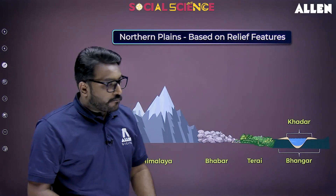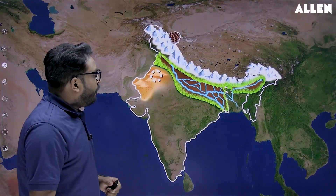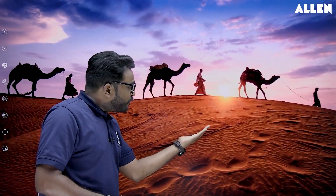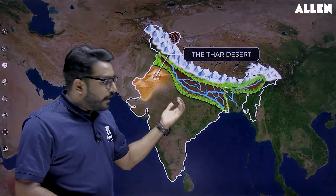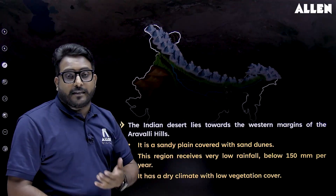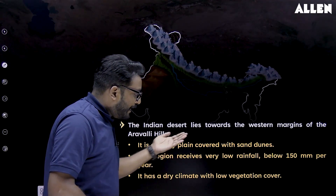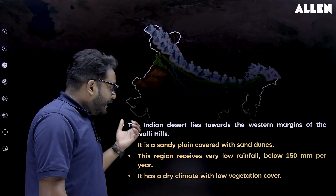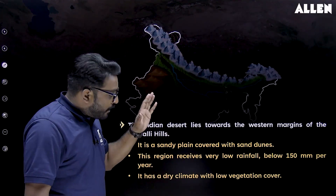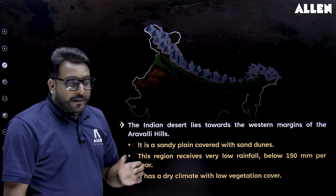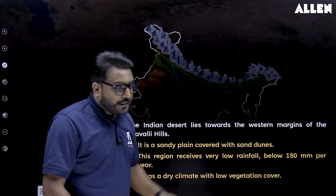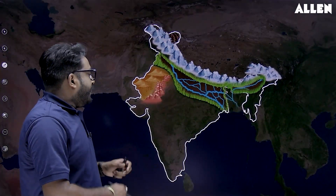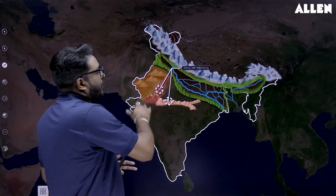The next physical feature is the Thar Desert, which lies to the western margins of the Aravallis. This desert region has sandy plains covered with sand dunes, receives very low rainfall below 150 mm per year, and has dry climatic conditions with low vegetation cover.